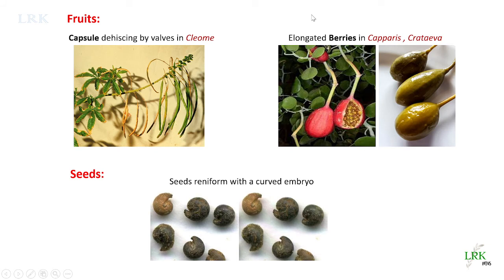Pollination takes place by insects. After pollination, fertilization occurs and fruit formation takes place. The fruit is a siliqua in Cleome viscosa, and a berry in Crataeva or a drupe in Emblingia. The capsule dehisces by valves when the fruits mature, liberating the seeds. Seeds are uniform or circular, non-endospermic, with a large embryo.